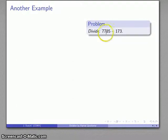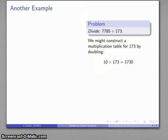So here's another example. Divide 7785 by 173. I might consider constructing a multiplication table for 173. And maybe I'll take advantage of an easy thing to do. I can just double the numbers.